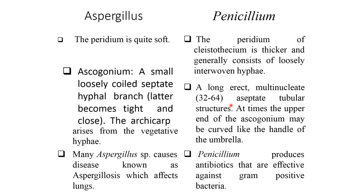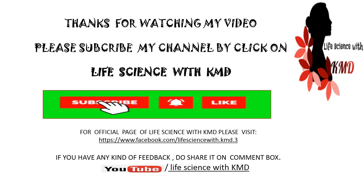At times, the upper end of the ascogonium in Penicillium may be curved like the handle of an umbrella. Many Aspergillus species cause diseases known as aspergillosis, which affect the lungs, whereas Penicillium produces antibiotics that are effective against gram-positive bacteria.